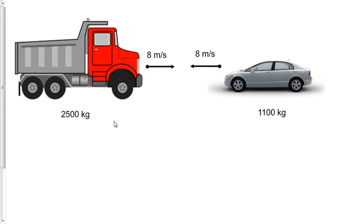We have a 2,500 kg truck traveling at 8 meters per second, going to collide with a 1,100 kg car at 8 meters per second going the opposite direction. They're going to collide in a perfectly inelastic collision. The question is: what would the impulse change be for an 80 kg person in the truck versus the 80 kg person in the car?